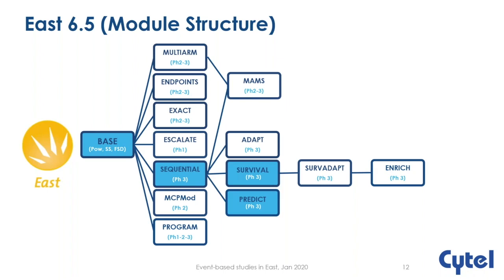This is the current structure of EAST — it's modular. The modules highlighted in blue are the ones we're going to be touching on today. We're going to start on the left with the base module, beginning with a fixed sample size design, moving to a group sequential design with survival endpoints. We're also going to be doing conditional simulations and utilizing the predict module to update the probability of success and update our prediction for enrollment and events.